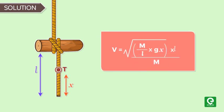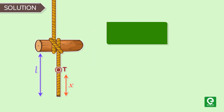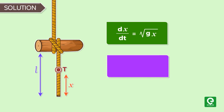On substituting the value of tension in equation 1, we get velocity equal to square root of gx. Or we can write dx by dt equals square root of gx. Simplifying this, we get x raised to the power minus 1 by 2 times dx equals square root g times dt.